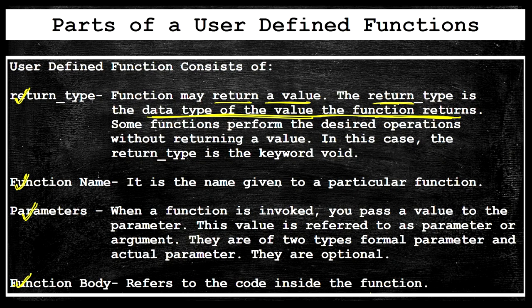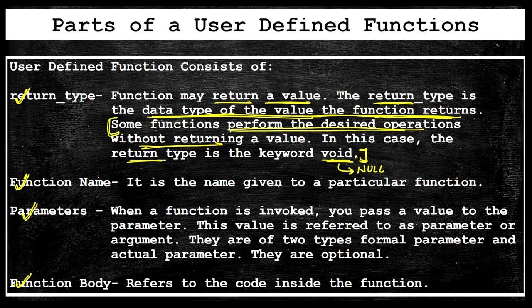It may also happen that some functions perform a desired operation but do not return any value. Such functions have a return type called void, meaning null — they don't return any value. After the return type, every user-defined function has a function name, which is the name given to that particular function — just like a variable name.